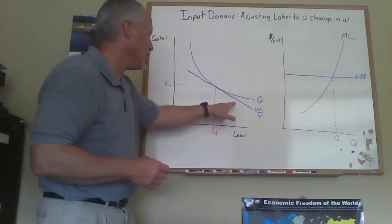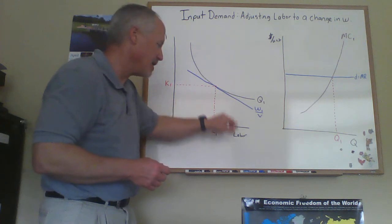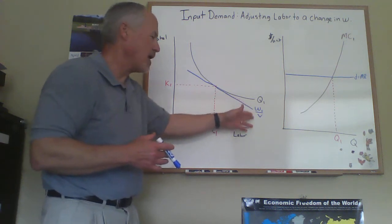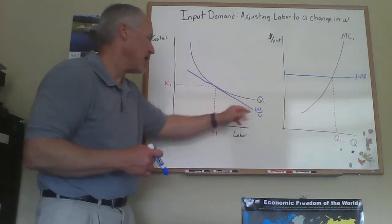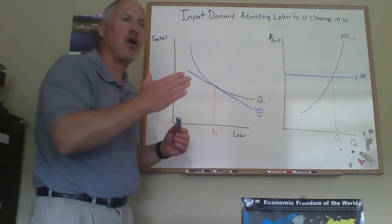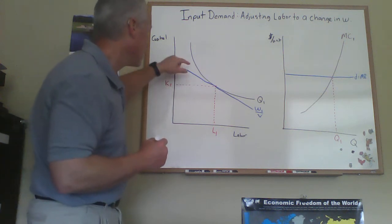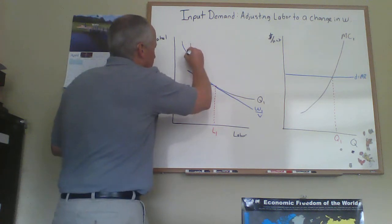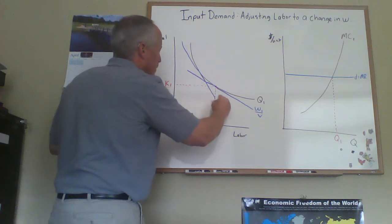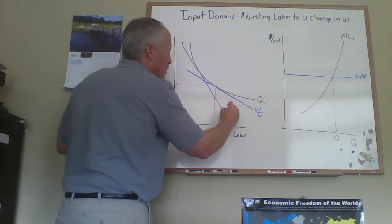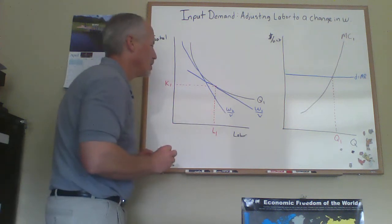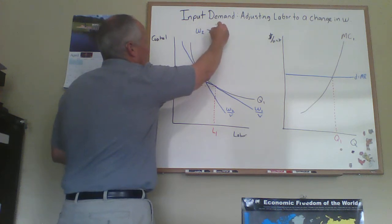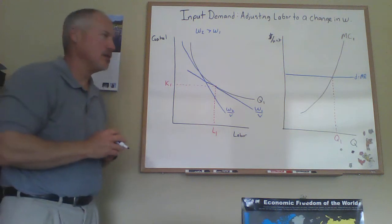So the first thing we have to do is draw a new isocost representing a higher wage of labor. The slope of the isocost is wage divided by the price of capital. So as the wage of labor goes up, the isocost will become steeper. So we have a steeper isocost, and we're going to find the one that would be tangent to Q1. That would be okay, up here. So that's W2 over V, that's giving us the slope of this isocost line. And I'll just note up here, W2 is greater than W1. So we're looking at an increase in the wage of labor.